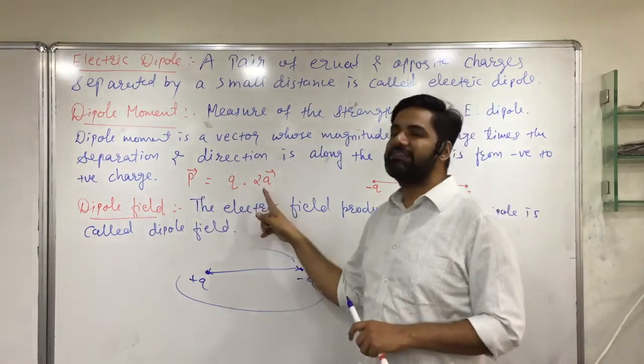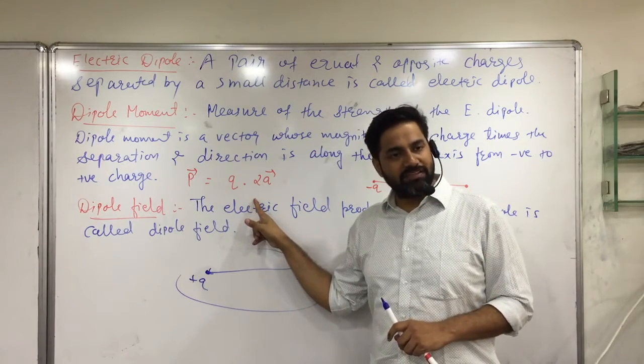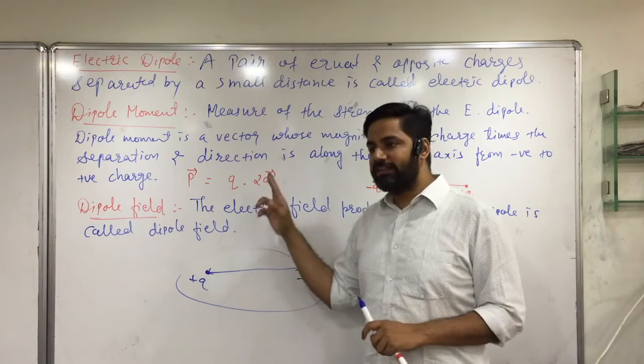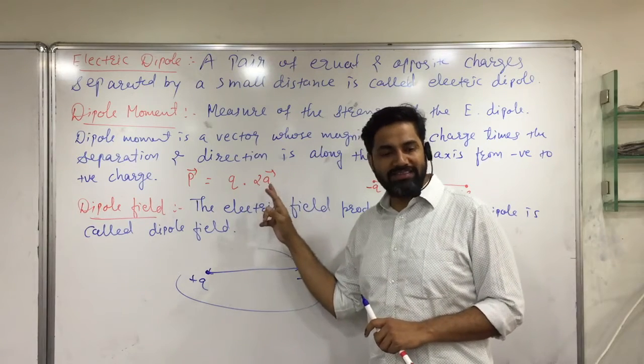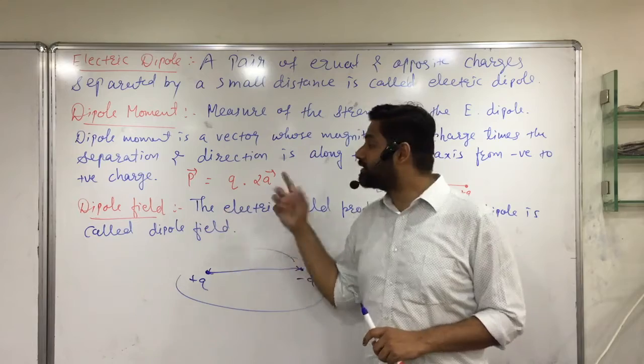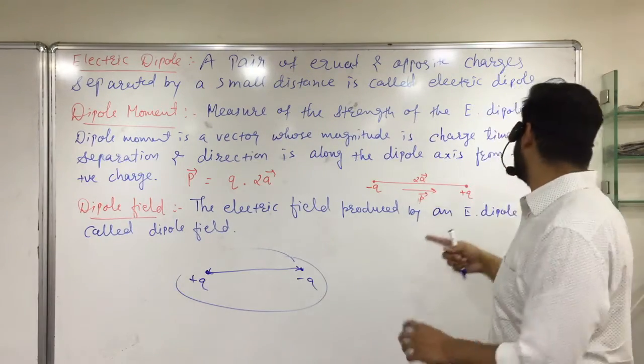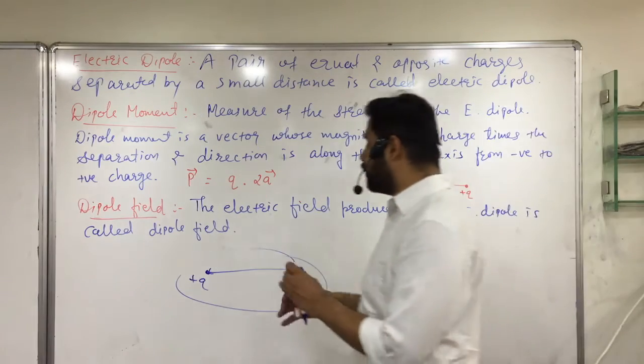It is Q times the separation, charge times the separation. Charge times the separation or separation times the charge. It is charge times the separation or separation times the charge. Which direction is it? Direction is along the dipole axis.